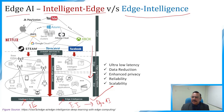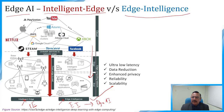Edge intelligence studies how to run AI models on the edge. It is a framework for training and inference of AI models within the device-edge-cloud continuum. It aims at extracting insights from massive and distributed edge data with satisfaction of algorithm performance, cost, privacy, reliability, efficiency, etc. Therefore, it can be interpreted as AI on the edge.